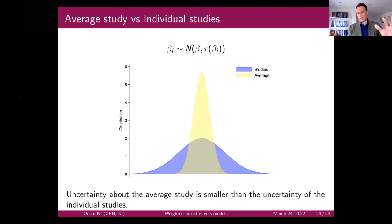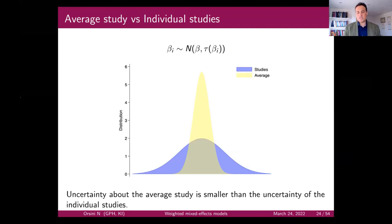In dose-response meta-analysis, you have two curves: the blue line (average dose-response) and the yellow curve, which reflects the variation across studies — point-wise, comparison by comparison, for example 10 versus zero, 9 versus zero, and so on.